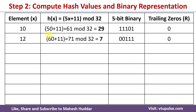Next, consider the element 12: 12 × 5 = 60; 60 + 11 = 71; 71 mod 32 = 7. The binary representation of 7 is 00111. There are no trailing zeros, so the number of trailing zeros is 0.